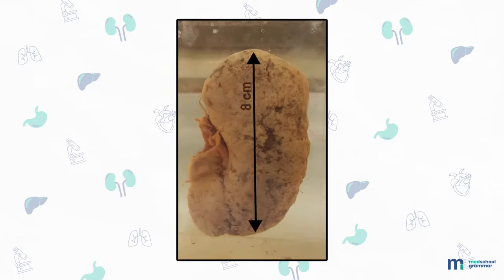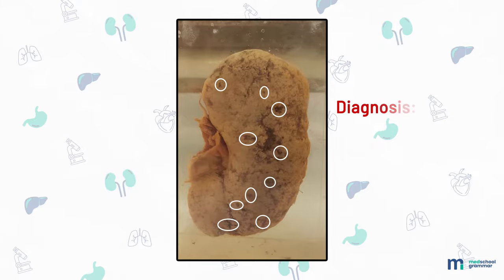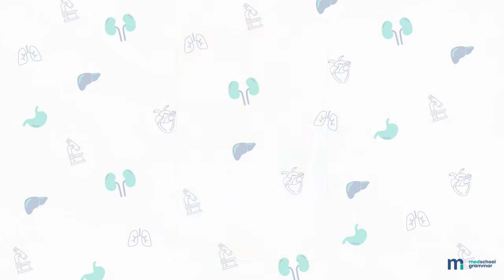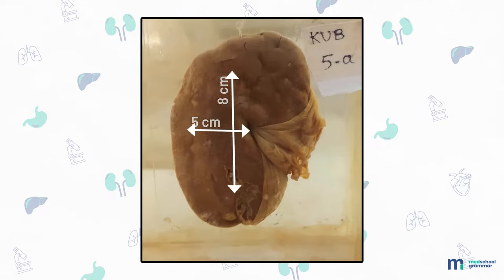Specimen of kidney, 8 by 4 by 1 centimeter. External surface shows presence of multiple pinpoint hemorrhages all over cortical surface. Cut surface: corticomedullary ratio is normal. Diagnosis: flea bitten kidney.